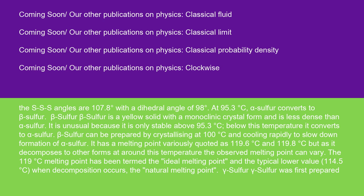Beta-sulfur is a yellow solid with a monoclinic crystal form and is less dense than alpha-sulfur. It is unusual because it is only stable above 95.3°C; below this temperature it converts to alpha-sulfur. Beta-sulfur can be prepared by crystallizing at 100°C and cooling rapidly to slow down formation of alpha-sulfur. It has a melting point variously quoted as 119.6°C and 119.8°C, but as it decomposes to other forms at around this temperature, the observed melting point can vary. The 119°C melting point has been termed the ideal melting point, and the typical lower value, 114.5°C when decomposition occurs, the natural melting point.